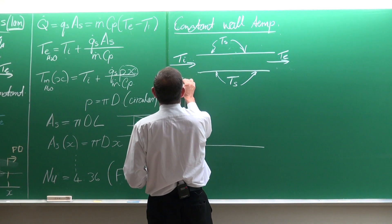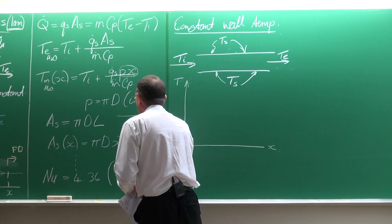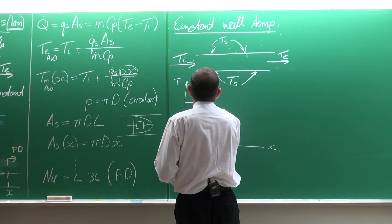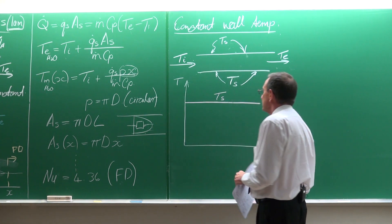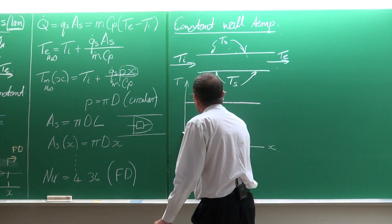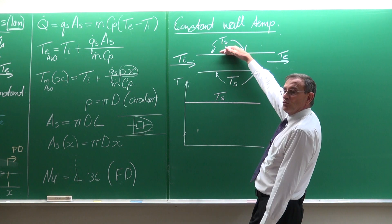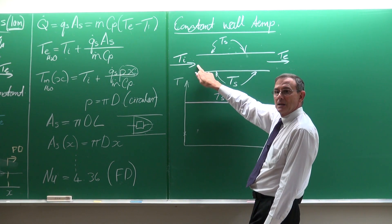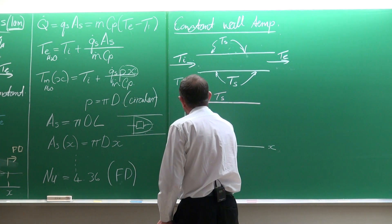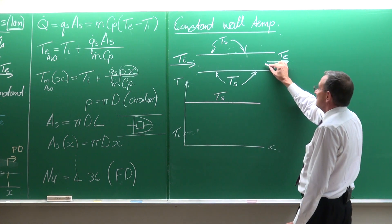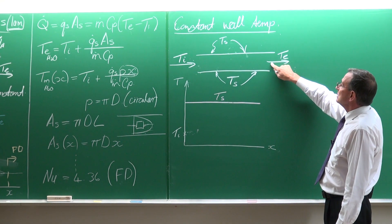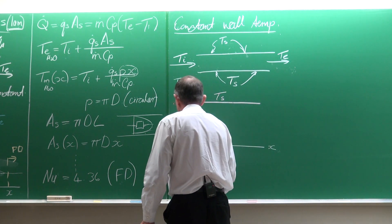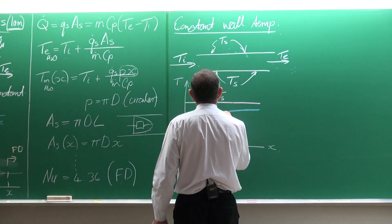If we look at the temperature as a function of X, and suppose the wall temperature is higher than the temperature of the fluid on the inside, then that surface temperature TS is going to remain constant. If this wall is at 100 degrees Celsius and you've got water flowing in at 20, then at the inlet the temperature difference is going to be 80 degrees Celsius. If the wall is infinitely long, then the water temperature will eventually reach 100 degrees — so it increases as it flows downstream.